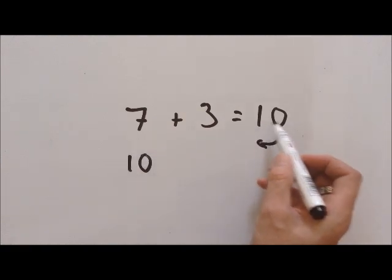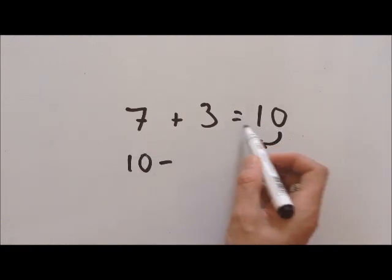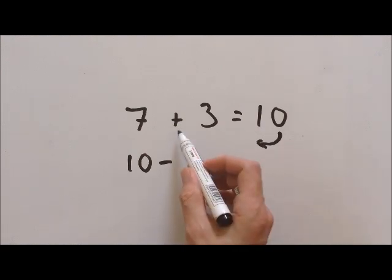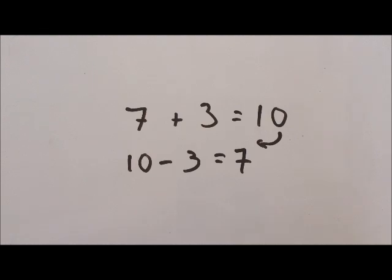Ten minus—I put the minus in the place of the equals—three, and then that would equal seven. So we've done the reverse operation, or they call it inverse, but I like to think of it as reverse.